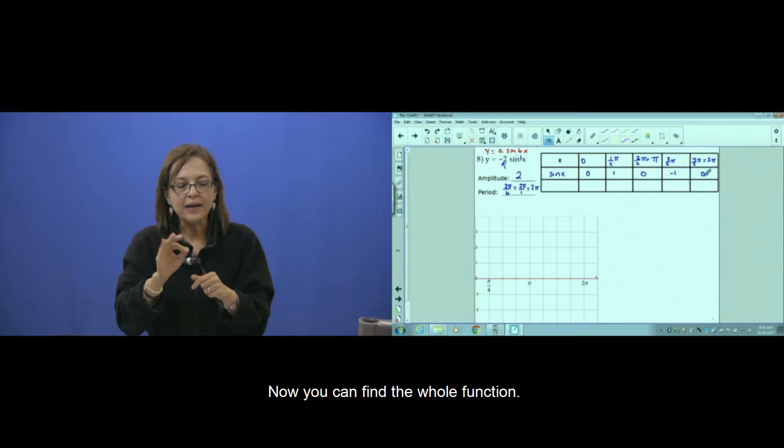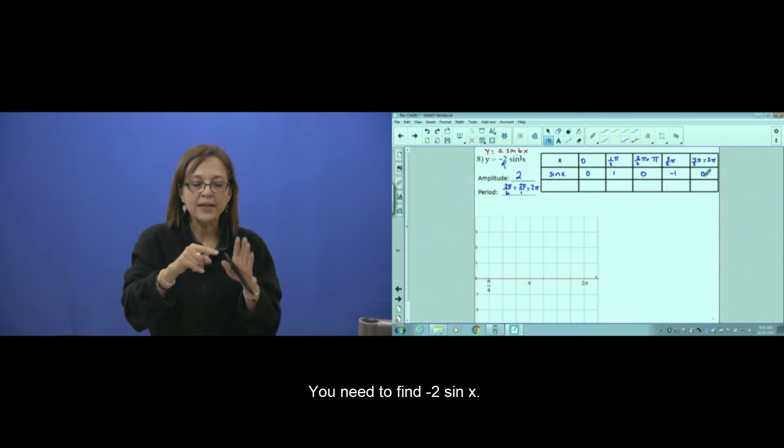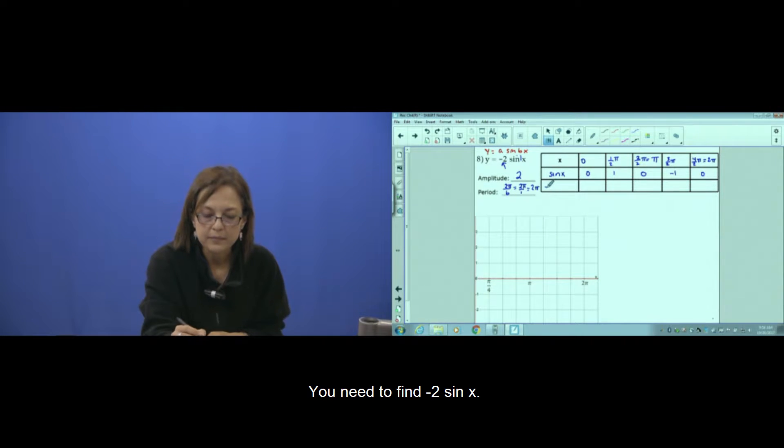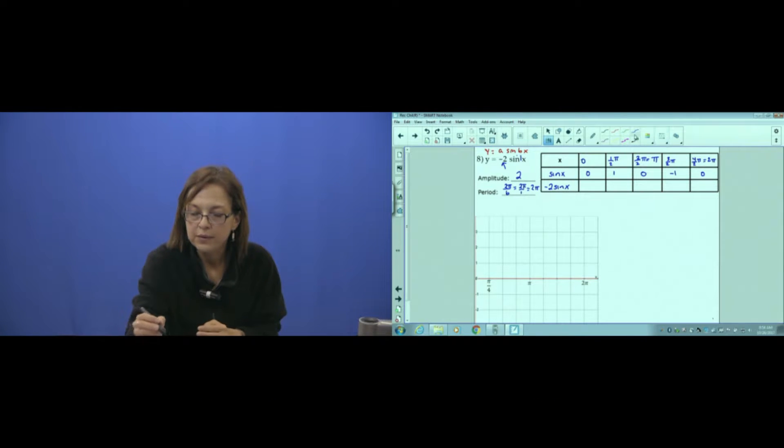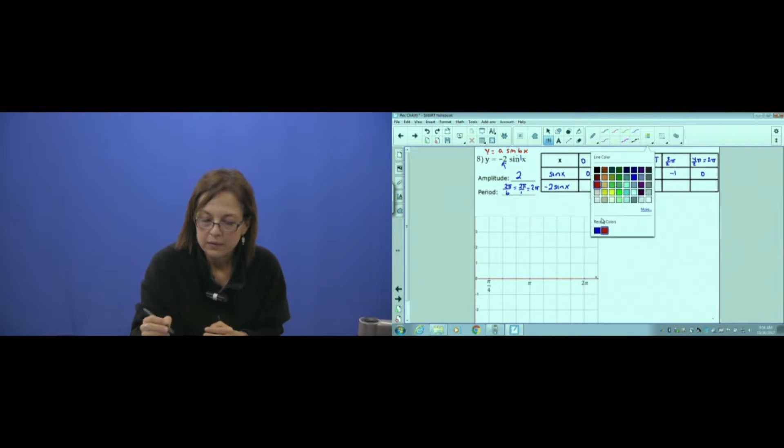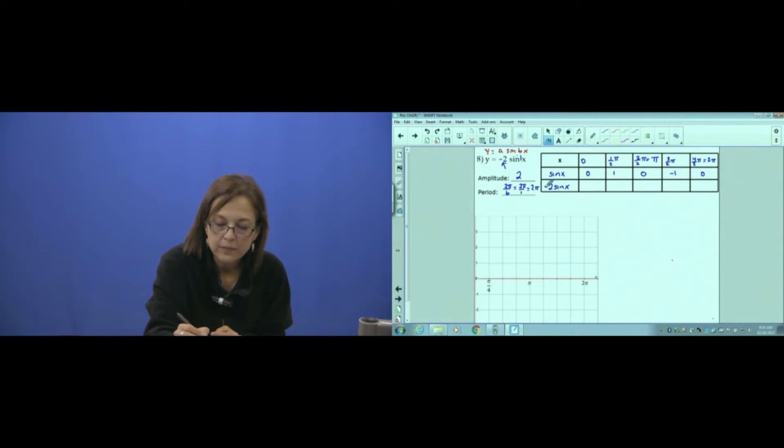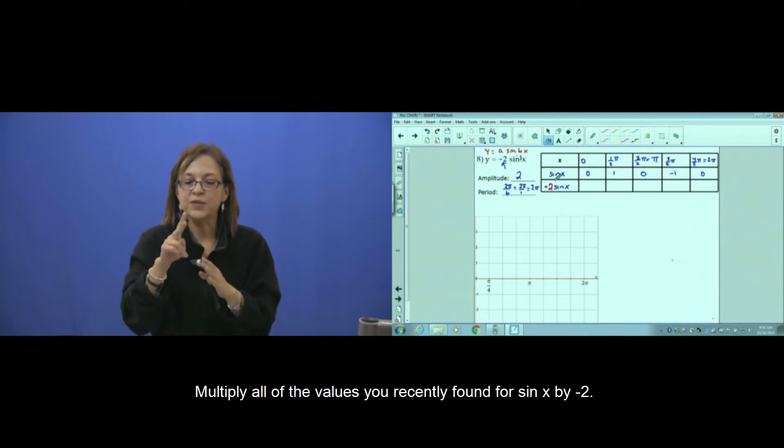Now you can find the whole function. We have to find the negative 2 sine of x. What to do? Now the only thing is multiplying by negative 2 the previous values of sine.